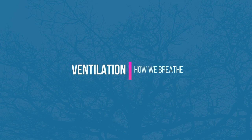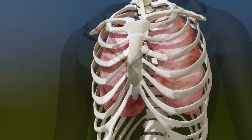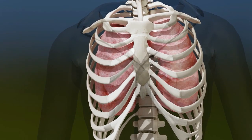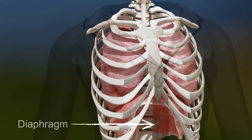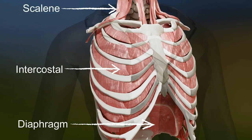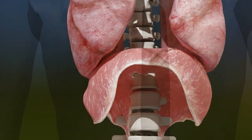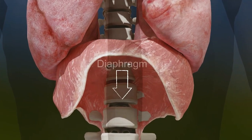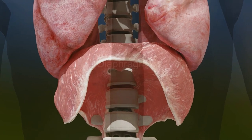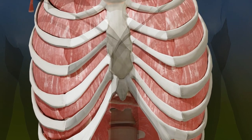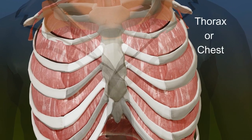Ventilation. Our ventilatory pump brings air in and out of our body using three main respiratory muscles: the diaphragm, intercostal and scalene muscles. When they contract, three things happen at the same time. The diaphragm, a large dome of muscle, flattens and pulls down. This increases the height in our thorax or chest.